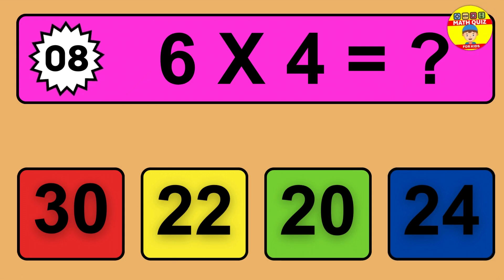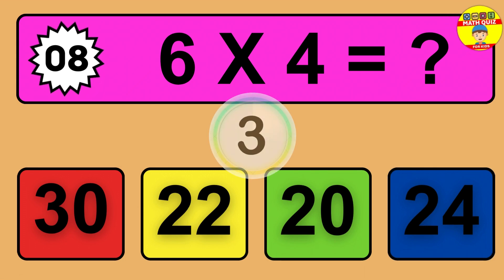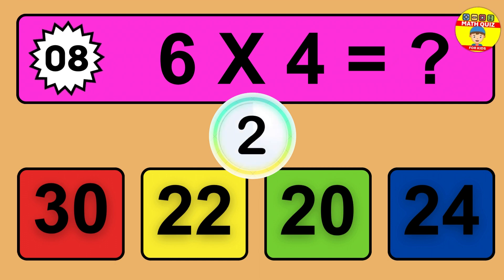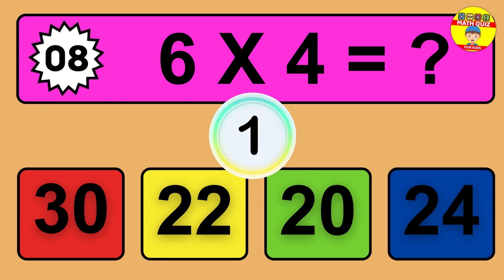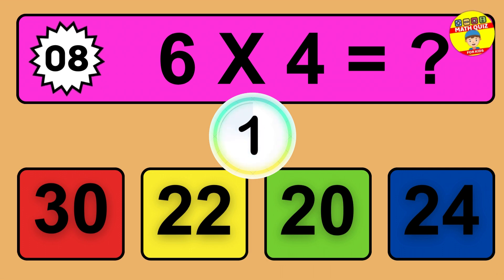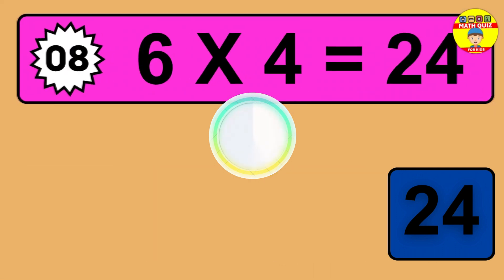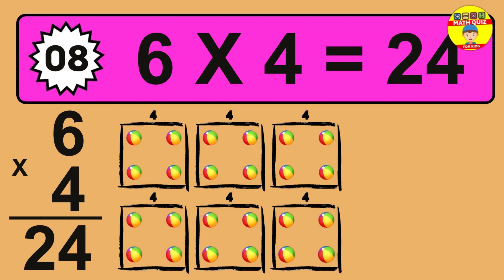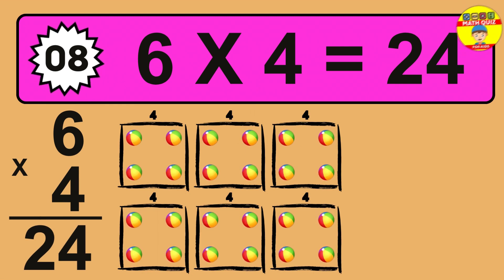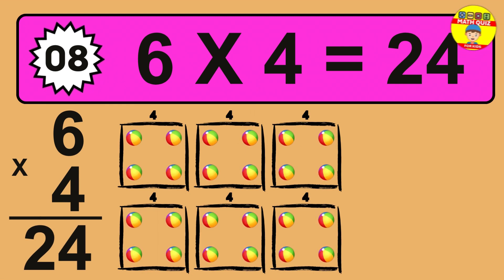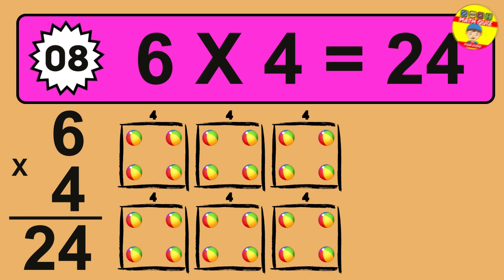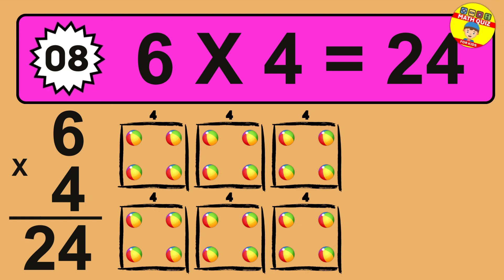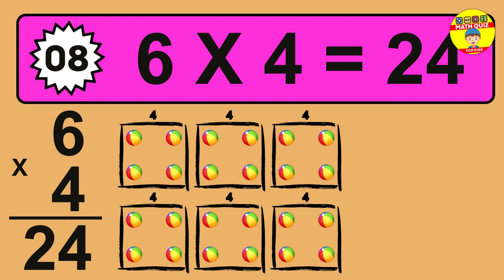Question 8. 6 times 4 equals what? The answer is 6 times 4 is 24. To calculate, we have 6 groups with 4 balls each one. So how many balls do we have? 24 balls.